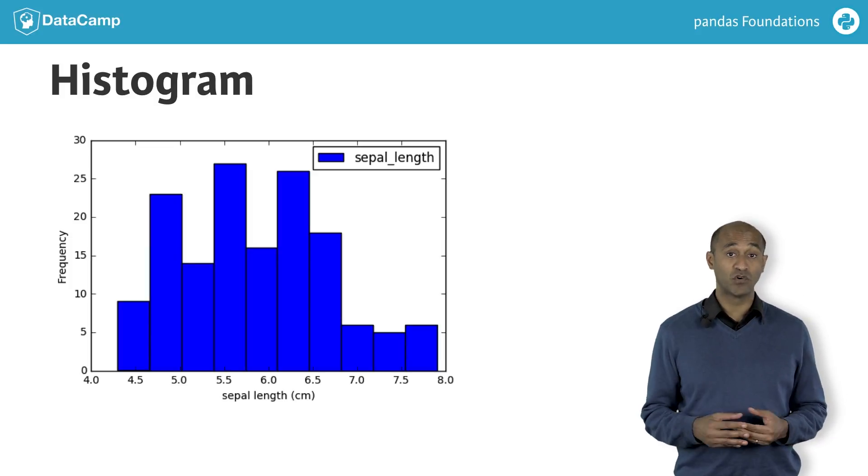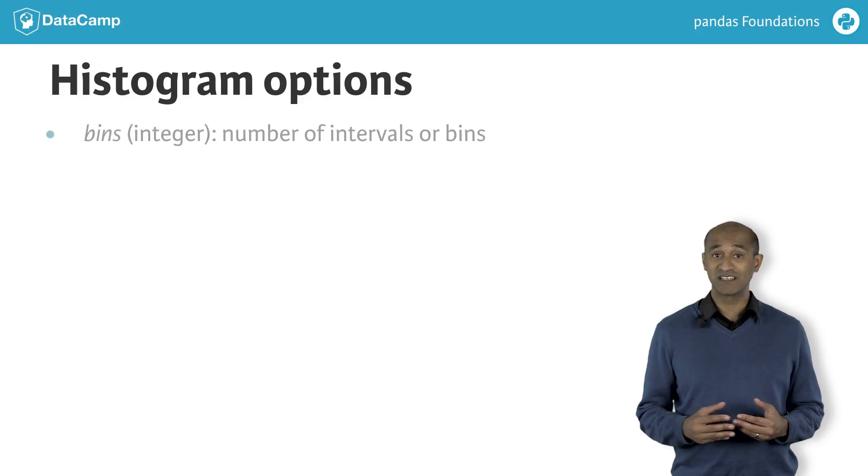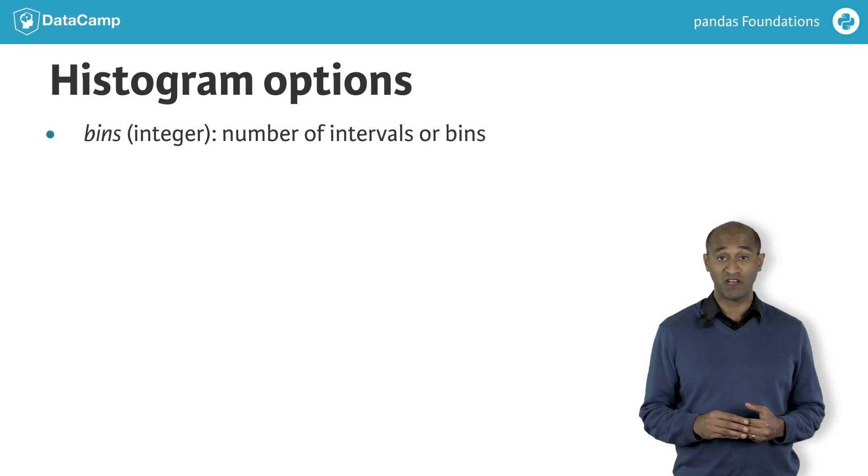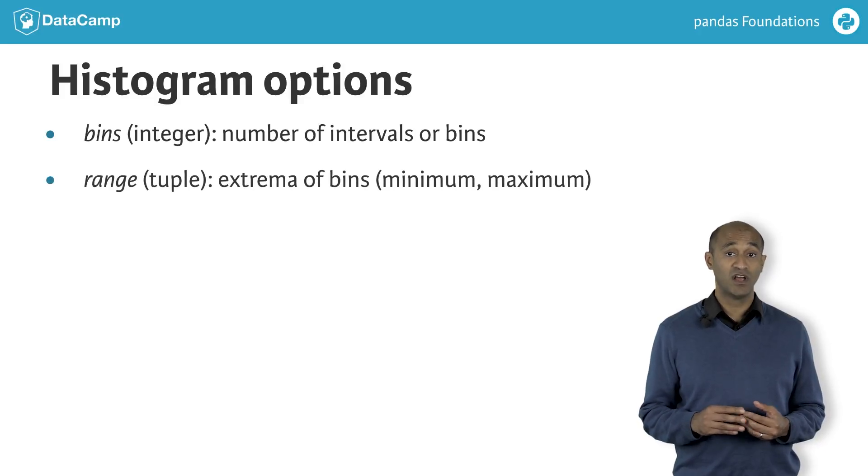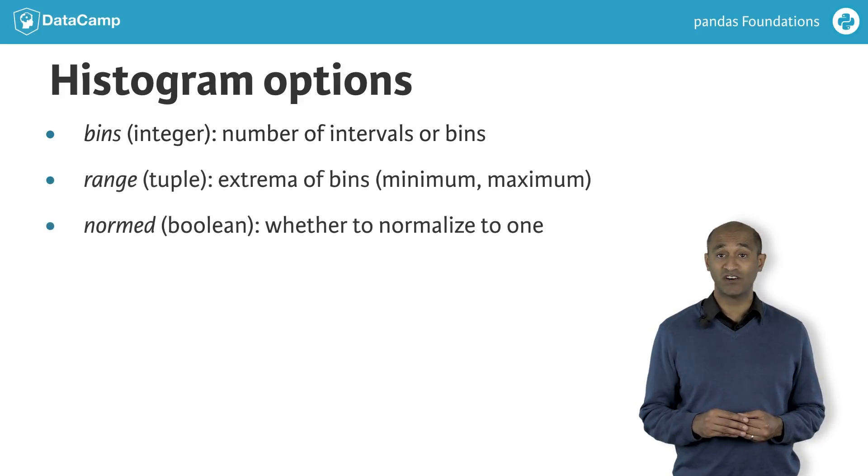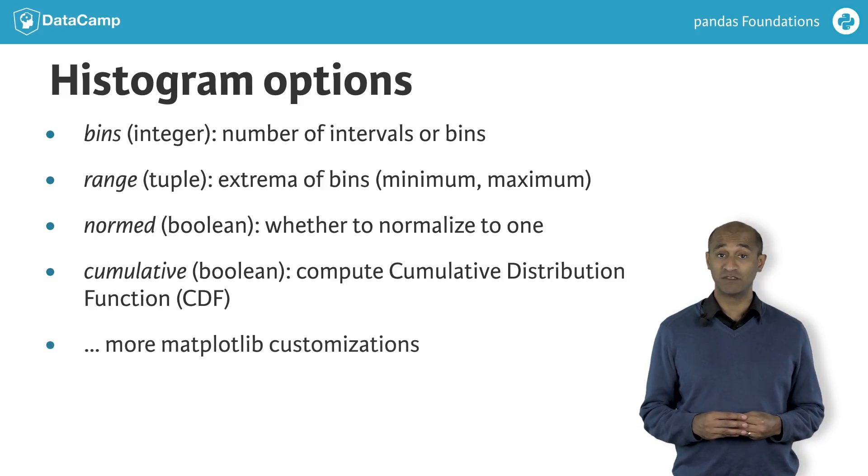We can redraw the histogram to get a better sense of the data. Other hist arguments can be parsed using the data frame plot interface. For instance, bins is the number of intervals to use in building the histogram. Range gives the extremes of the bins. Normed tells whether to rescale counts to add to one. Cumulative tells whether to draw the histogram or its cumulative distribution function. In fact, any matplotlib options can be specified using keyword arguments with plot.